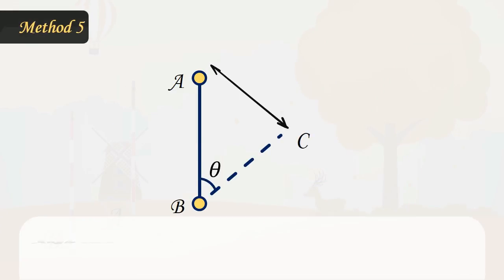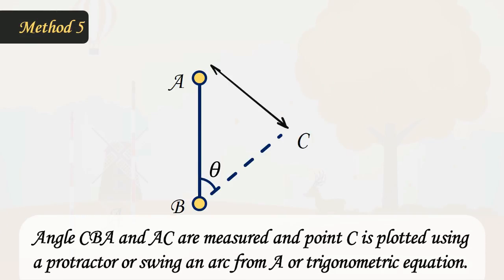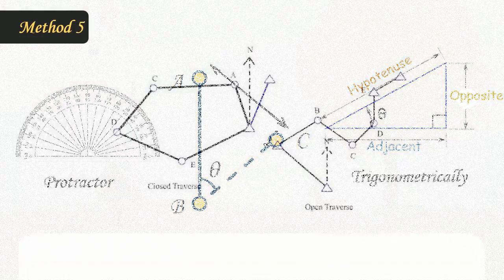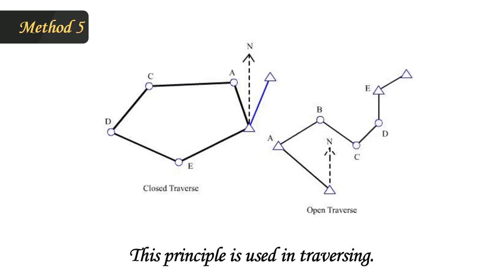Method 5: The angle CBA and distance AC are measured and point C is plotted using a protractor or by swinging an arc from A, or trigonometric equation. This principle is used in traversing.